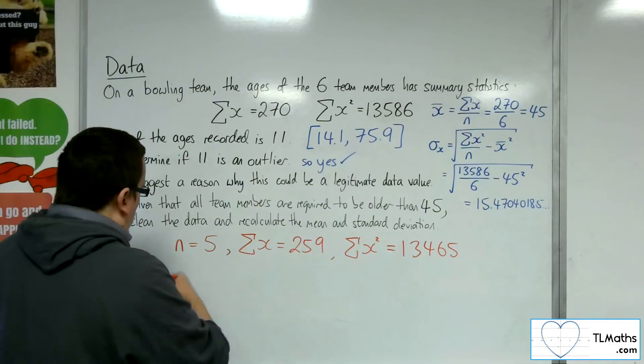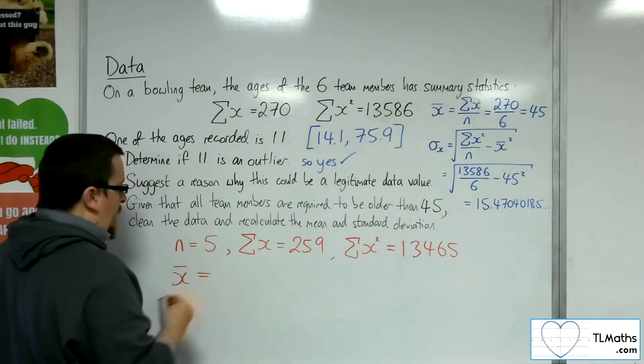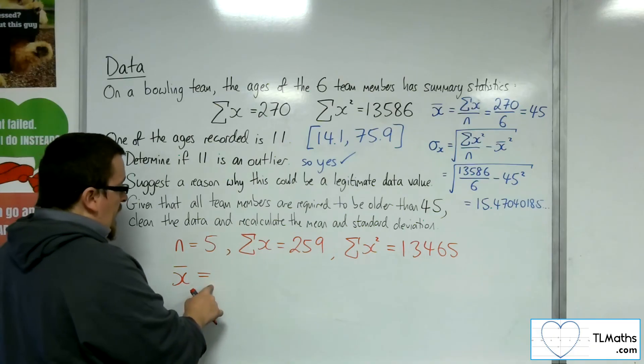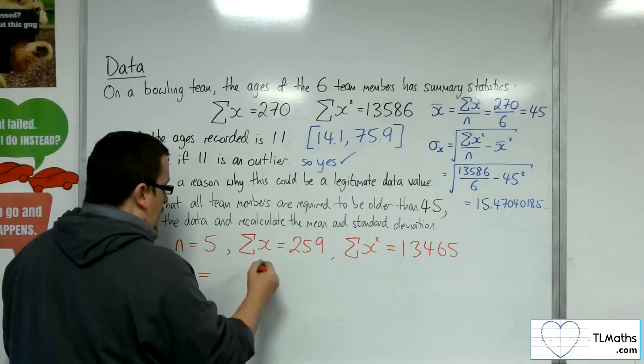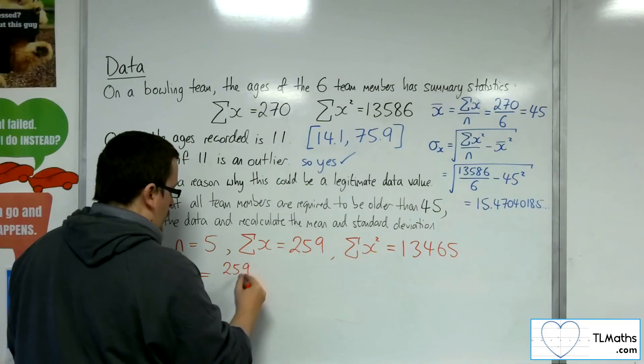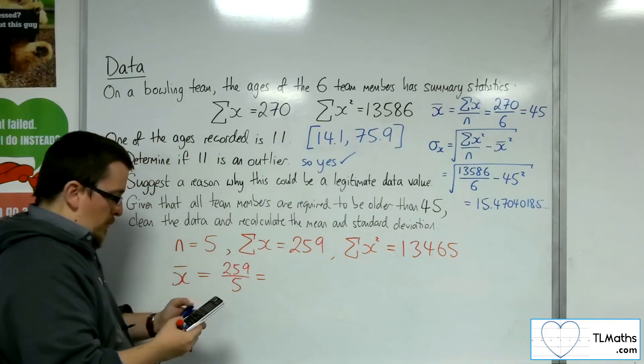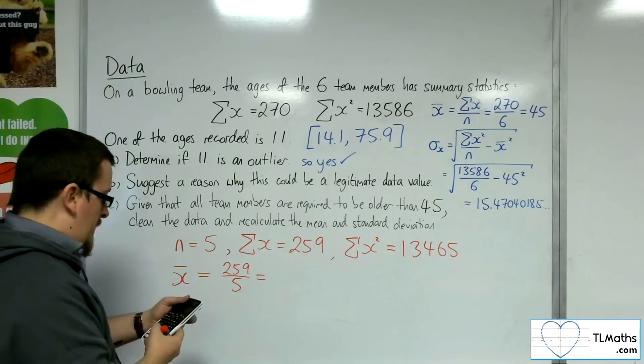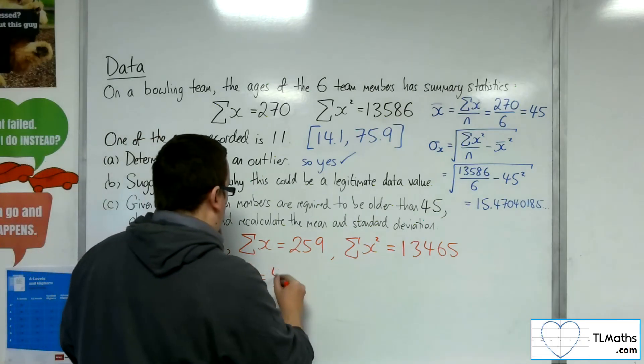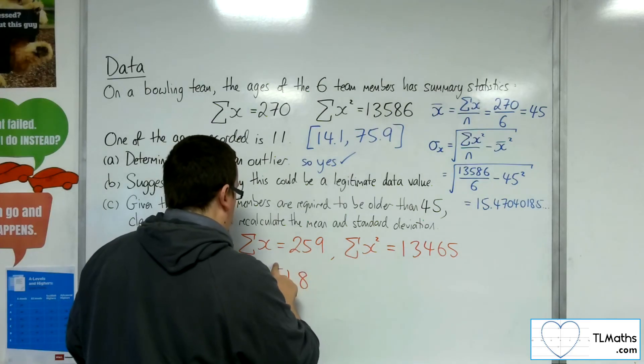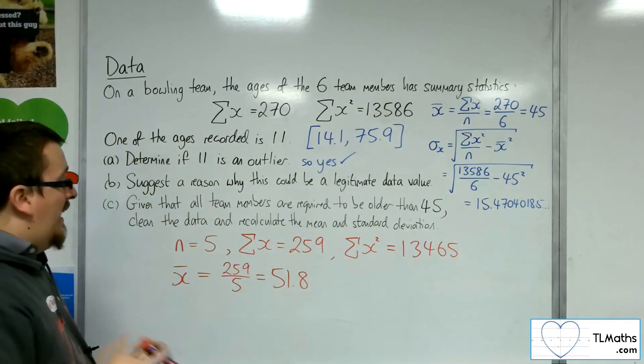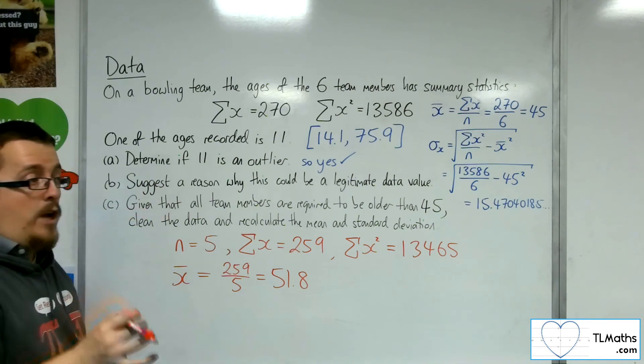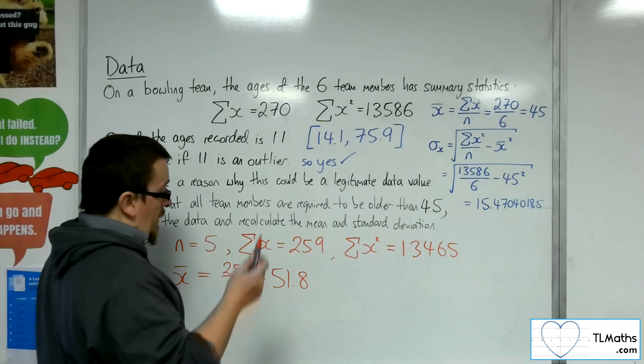So now we can work out a new mean and a new standard deviation. So the mean is the sum of x divided by how many there are. So 259 divided by 5, and that gets me to 51.8. So that's the new mean age of the five remaining team members that we know haven't been recorded incorrectly, or we assume haven't.